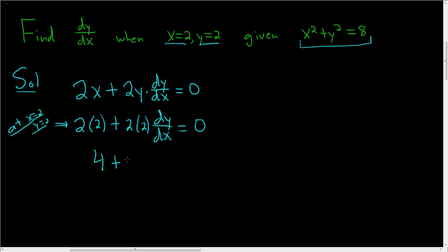So 4 plus 4 dy/dx is equal to 0. We can subtract 4 from both sides. So we end up with 4 dy/dx is equal to negative 4. Dividing both sides by 4, we have dy/dx is equal to negative 1.